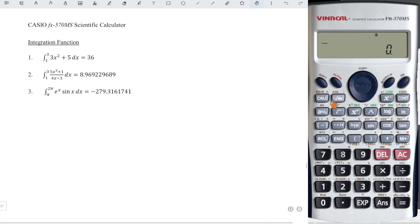First, we press the integration function followed by the function that we have here: 3x². To obtain x, press the alphabet button containing x, square, plus 5. Before we insert the interval, press comma followed by the lower limit 1, comma followed by the upper limit 3. When we press equal, we will obtain the correct value.